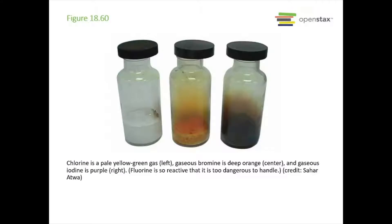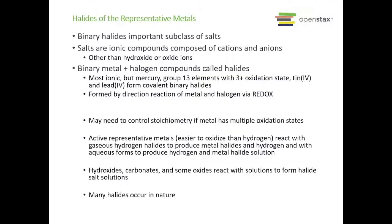Here's a picture showing you chlorine on the left, bromine in the center, and iodine on the far right. You can see chlorine is this pale gas, bromine has this gaseous orange vapor above it, and iodine has that purply-brown vapor above it due to their high vapor pressures.